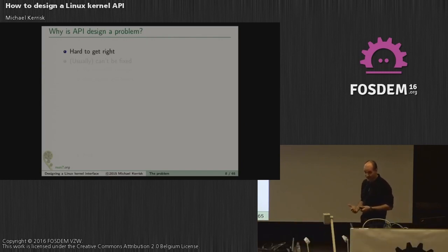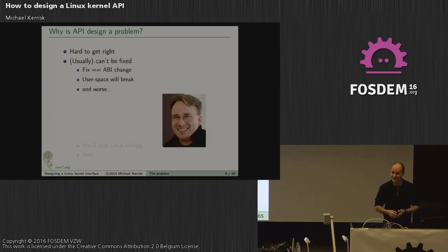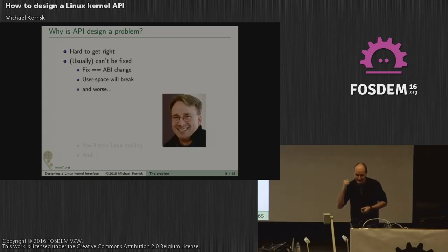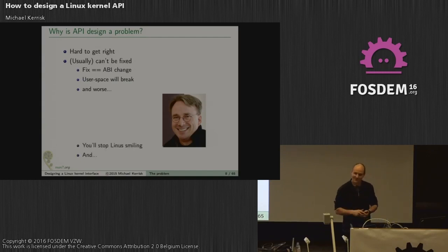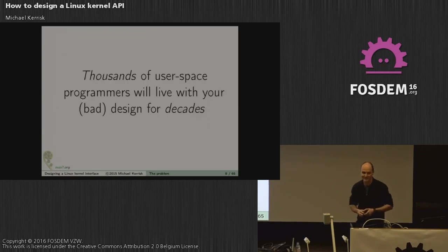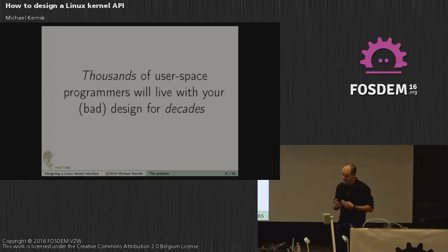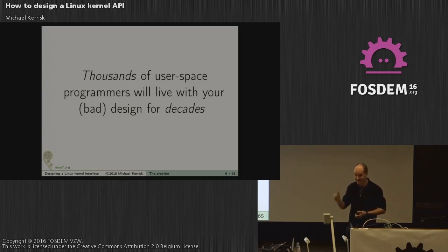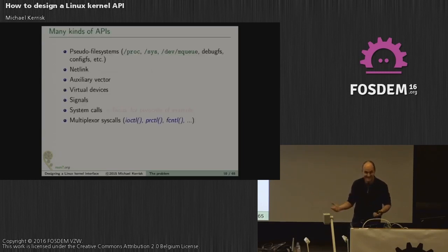API designs are hard to get right. Usually you can't fix them once you've released them, because fixing them usually means breaking the API. That's one of the push-button ways of getting Linus to yell — to say we just need to fix the API and maybe a few applications will break. That's pretty much guaranteed to get Linus unhappy. If you get this wrong, thousands of user-space programmers are going to live with your mistake for decades. The BSD sockets example is just such a case.